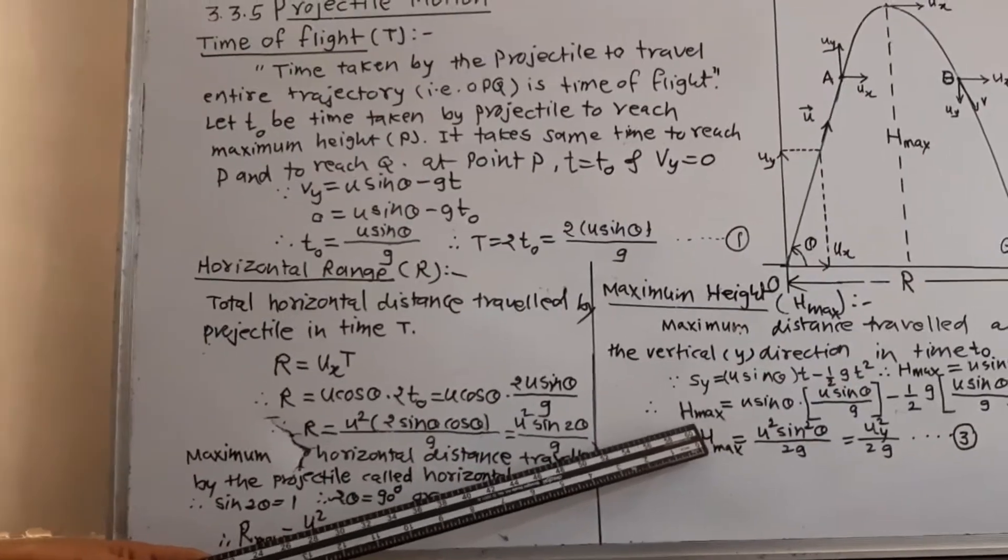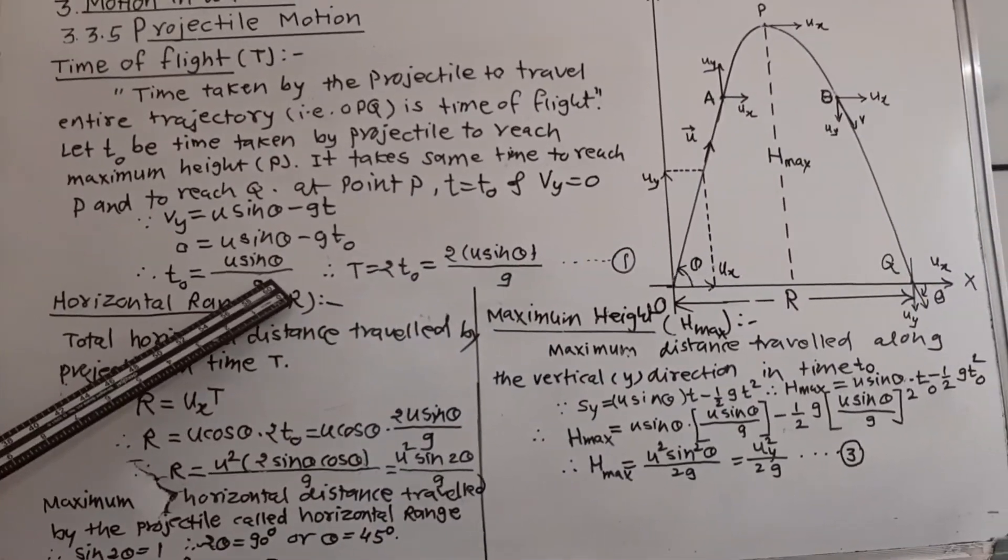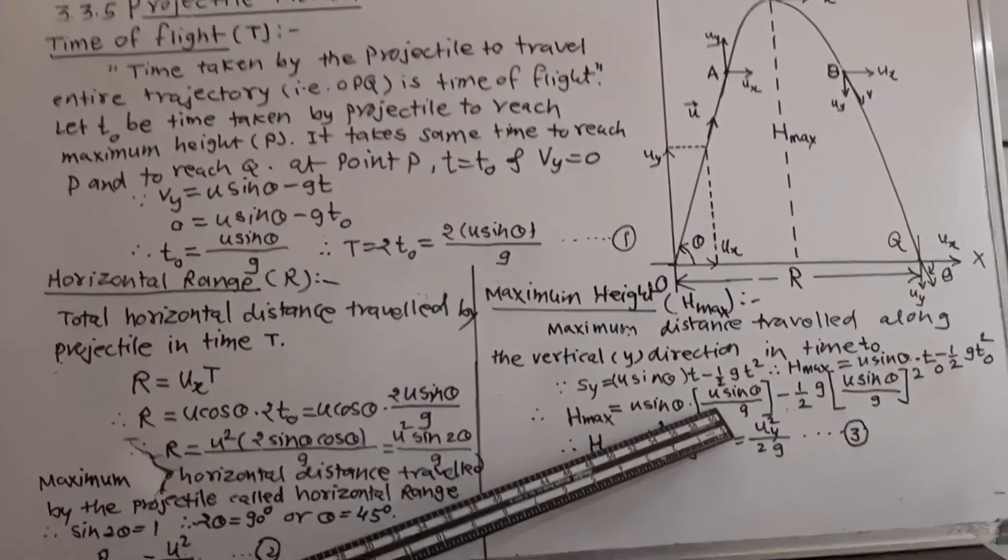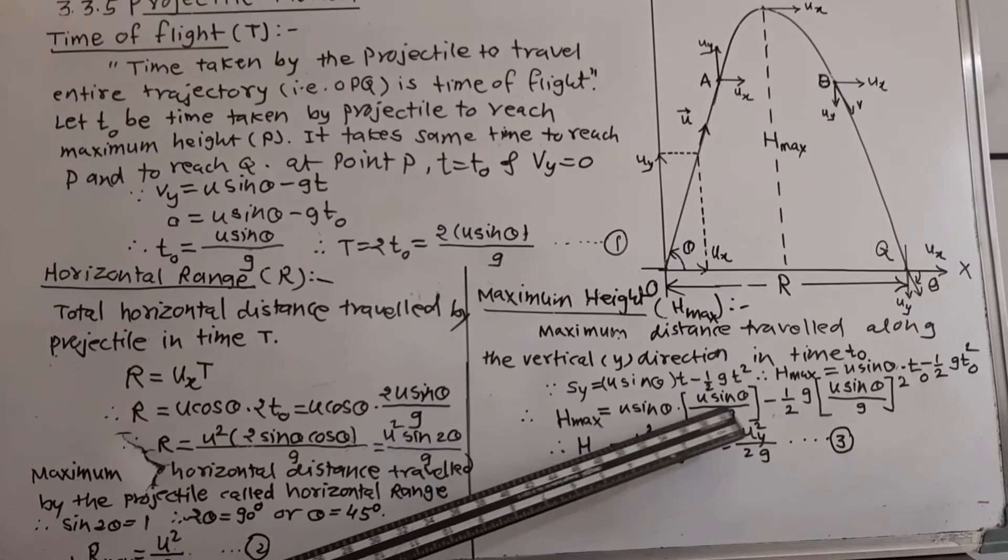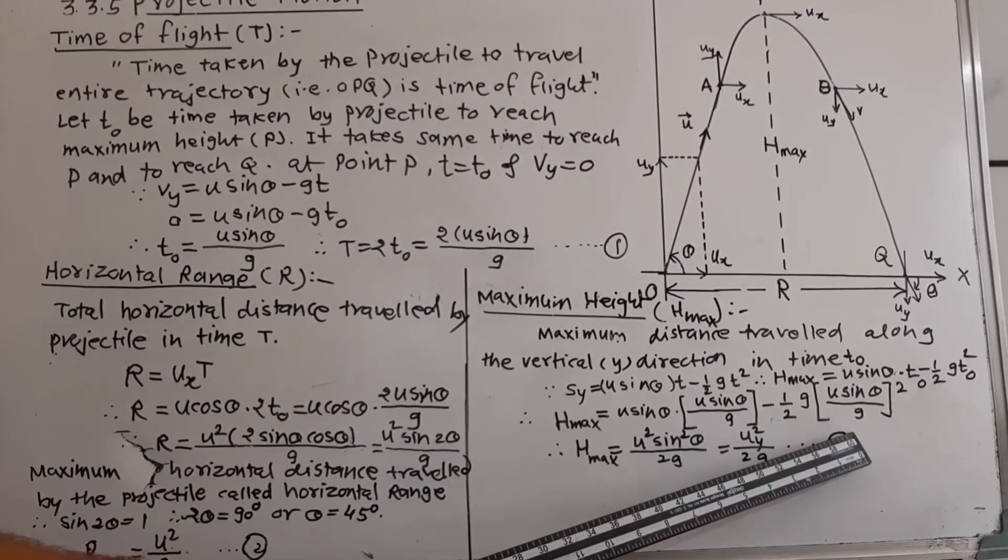Substitute the value of T0 here from this equation. T0 is here U sin theta upon G. So, H max will be U sin theta into U sin theta upon G minus 1 half G into bracket U sin theta upon G bracket square.